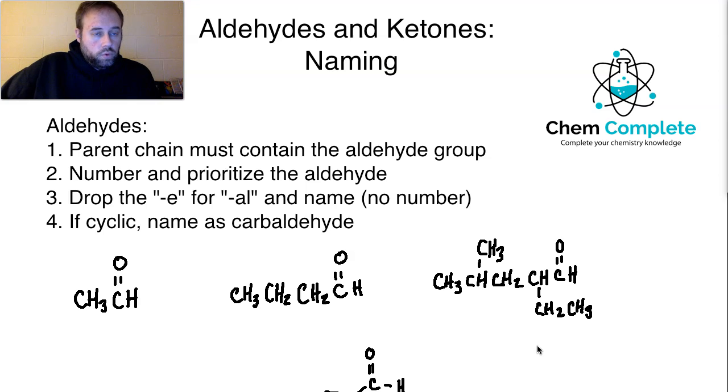For aldehydes, the rule, like with most upper level functional groups, is that the parent chain must contain the aldehyde group. And what that means is that even if you have a parent chain that's 20 carbons long, if that aldehyde is found branching off of the fourth carbon or something of that nature, then you have a five-membered carbon chain and the rest of that material would just be a substituent because you have to include the aldehyde. The carbon for that carbonyl that contains the aldehyde has to be included in the parent chain. Now number two is that you need to prioritize the aldehyde. So when you start numbering, the aldehyde will always be number one.